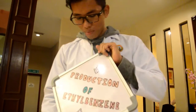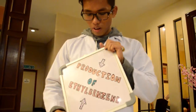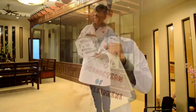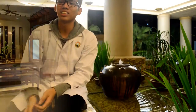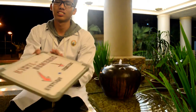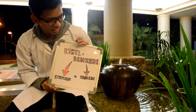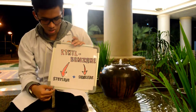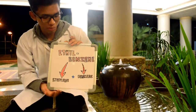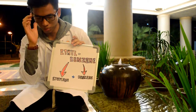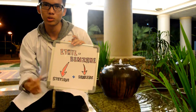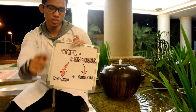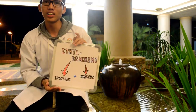Hey guys, today I'm going to talk to you about the production of ethylbenzene. But what is ethylbenzene? So basically, ethylbenzene is made up from a mixture of ethylene and benzene compound, which I'm going to discuss in detail.